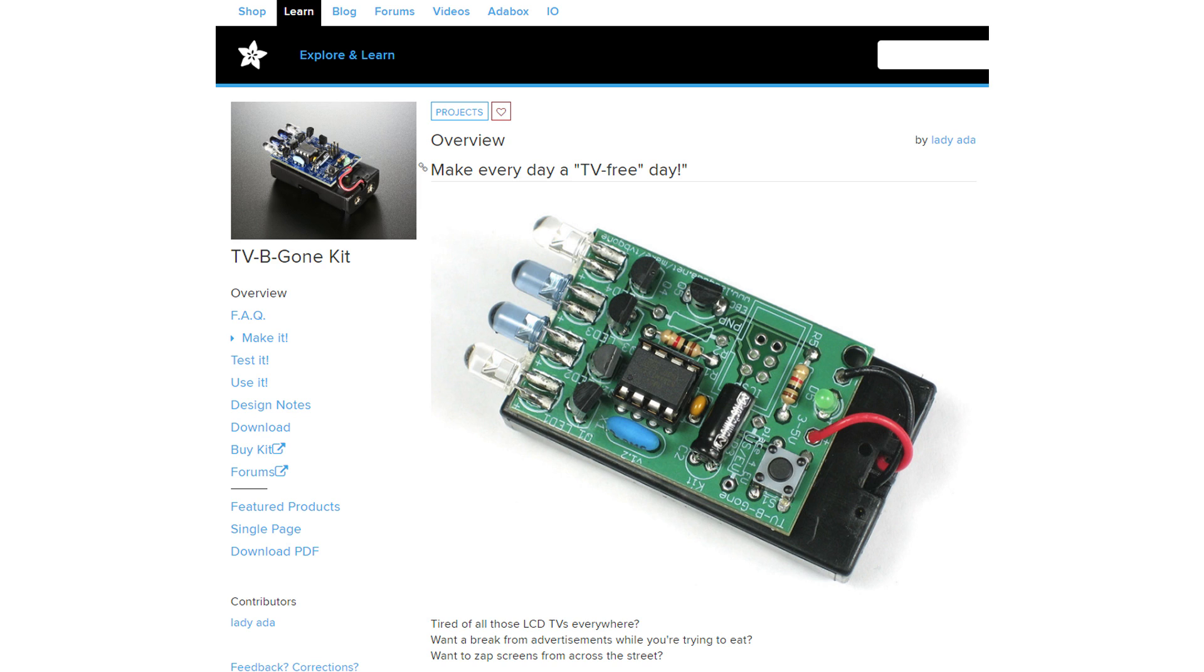The project was called TV B-Gone and it was a small Atmega microcontroller with an IR emitting diode and it contained the power off codes for most available TV remotes. The purpose was to point it at a TV and upon activation it will cycle through all of the codes eventually the TV would turn off.